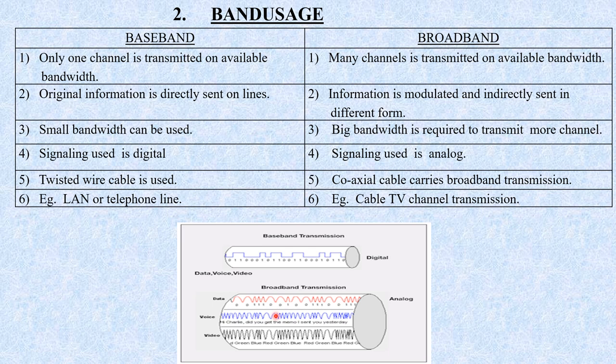In the exam, a question may ask you to distinguish between baseband and broadband — a 3-mark question where you draw a diagram showing a single signal for baseband and many signals for broadband, with 6 points of distinction. This can appear as a separate question or as part of the characteristics of transmission media. Now let us see the third characteristic: Attenuation.